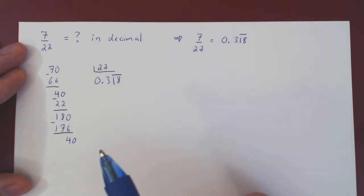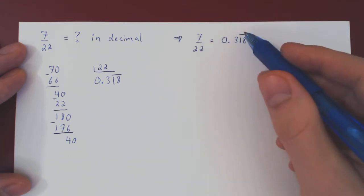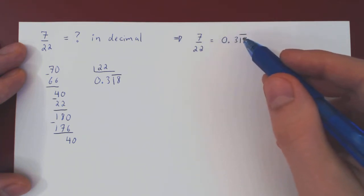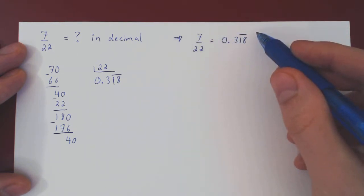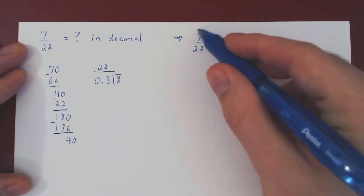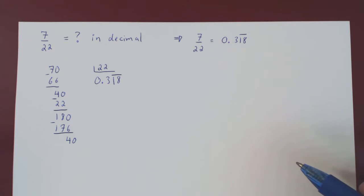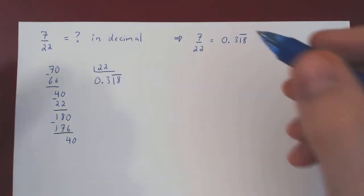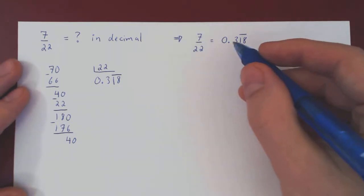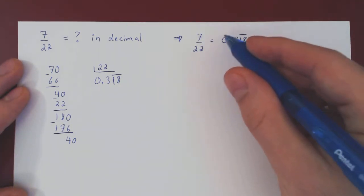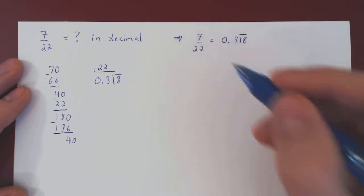What if we went backwards? What if we were given the decimal expansion of a real number — say, 0.3181818... and so forth — how could we then obtain the rational number? Well, this we can do with our knowledge of geometric series. Let's begin with the decimal expansion and prove that this is indeed the rational number 7 over 22.